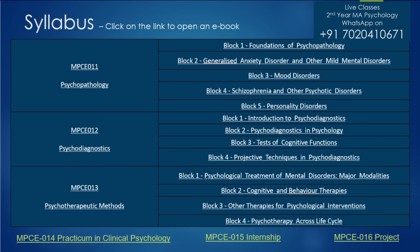All of this comes under MPCE 013. The module also covers other therapies for psychological intervention and psychotherapy across the life cycle — because a therapy useful in younger days may not be useful in older age. For example, psychoanalytic therapy focuses heavily on unconscious motives, childhood experiences, and family relationships, which is useful for younger or middle-aged clients but may not work well for someone aged 65–70 who may not clearly remember childhood experiences or what they have repressed.